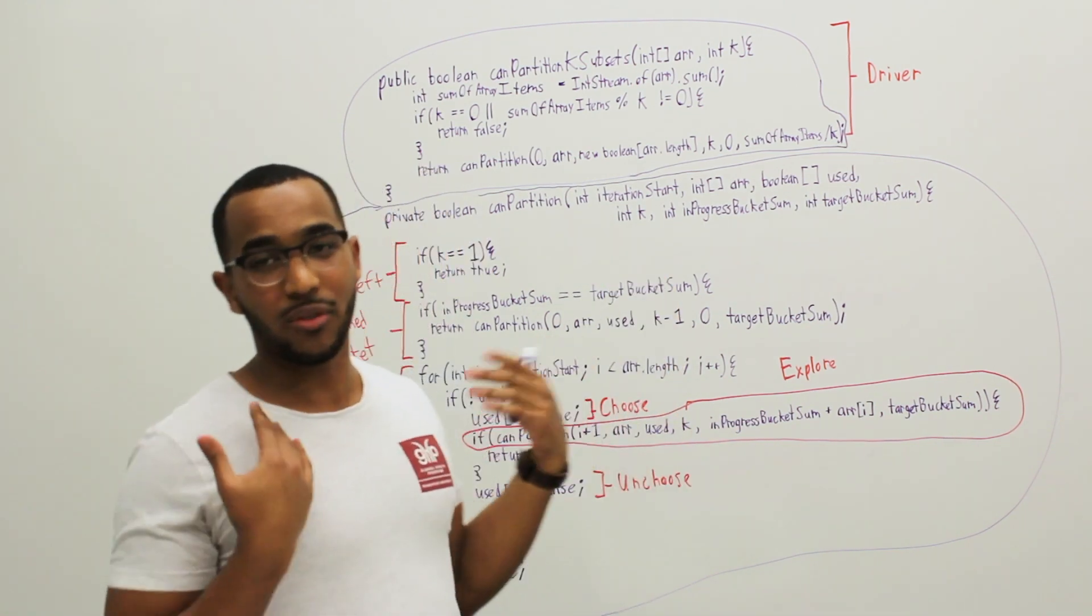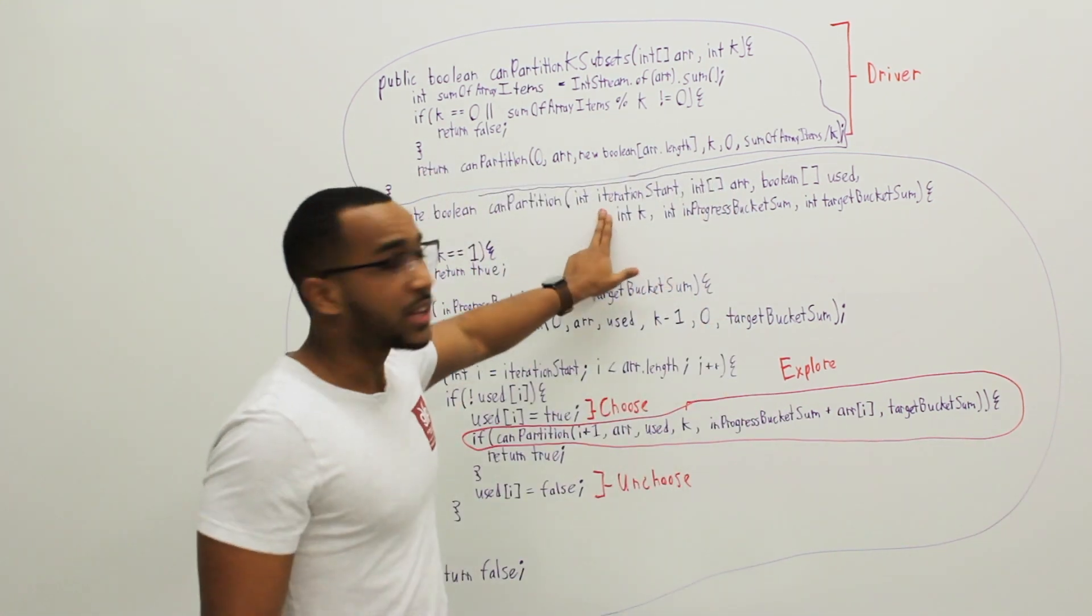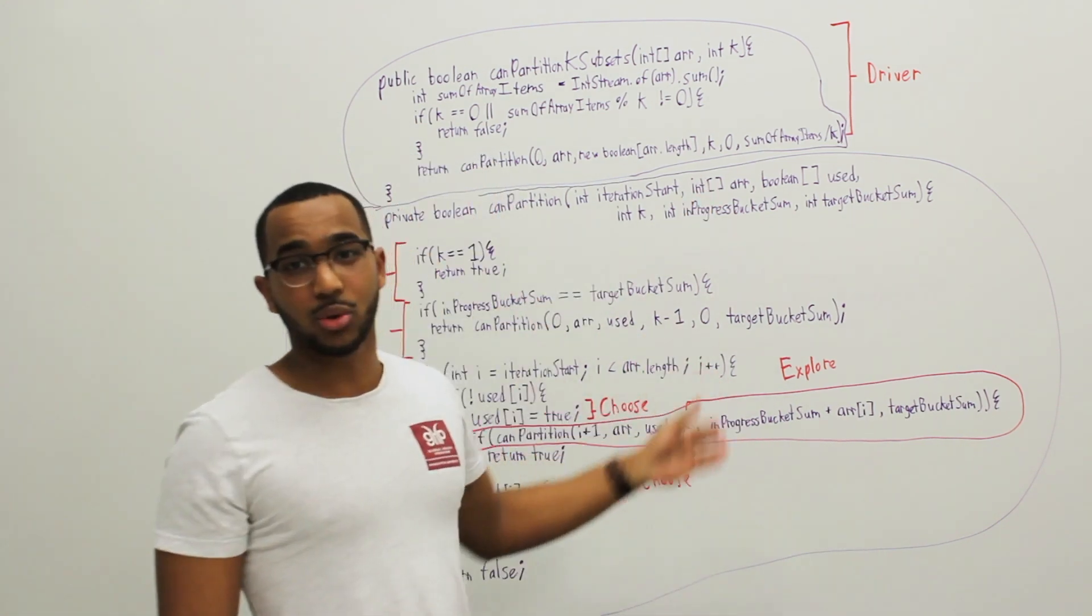So if we choose an item at index 1, then we won't be able to choose any item before that. We're going to have to choose items after that item. So all this does, iteration start just tells us where do we start choosing items from in the array. And then we have the actual array.